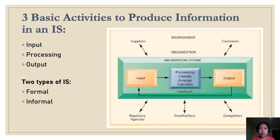Processing is done either by performing arithmetic or logical calculations on the data, or by simply rearranging the data. Third is output — output transfers the information produced from processing to the people who will use it or to the activities for which it will be used. There are two types of information systems: formal and informal. The system involves input, processing, and output, with various factors affecting both input and output.